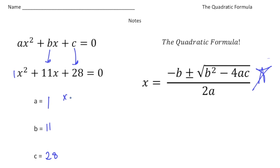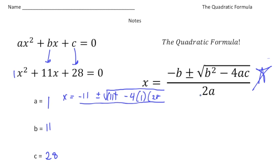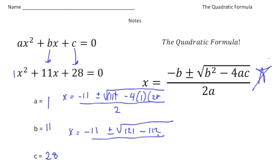So x is going to equal negative b. Well, b in this case is 11, so it's going to be negative 11 plus or minus the square root of b squared — 11 squared — minus 4 times a, which is 1, times c, which is 28. And we take this whole thing and divide it by 2 times a, so 2 times 1 is 2. So x equals negative 11 plus or minus the square root of 11 squared, which is 121, minus 4 times 28 times 1, which is 112. So it's 121 minus 112, divided by 2.